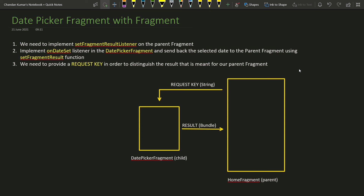Let me show you some diagrams so you can understand the process. We are doing three steps: first, inside HomeFragment we implement a setFragmentResultListener. Then we show the DatePickerFragment from which the user chooses a date. After the date is selected, the selected date is bundled and sent back to the parent fragment — in our case, HomeFragment. Inside the DatePickerFragment's onDateSet method, we send data back using setFragmentResult. The important thing is the request key, which identifies the result for our specific fragment.